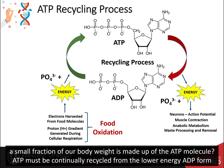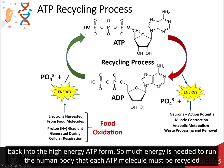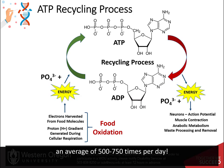ATP must be continually recycled from the lower-energy ADP form back into the high-energy ATP form. So much energy is needed to run the human body that each ATP molecule must be recycled between 500 and 750 times per day.